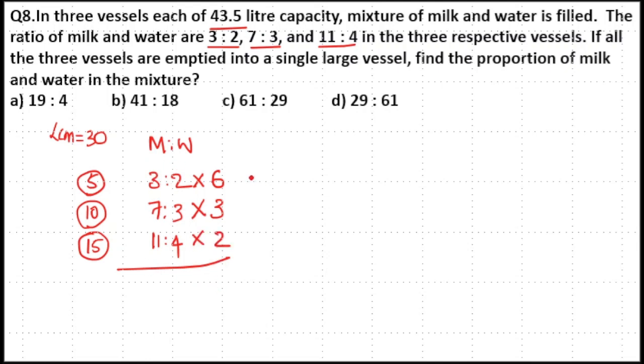Now first ratio will become 6 into 3, 18 is to 6 into 2, 12. Second ratio will become 3 into 7, 21 is to 3 into 3, 9. Third ratio will become 2 into 11, 22 is to 2 into 4, 8.